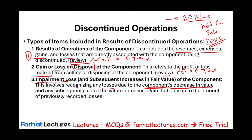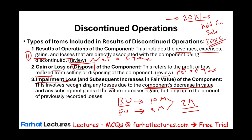So we put this discontinued operation for sale. The book value of the whole division is $10 million; the fair market value is $8 million. That means we have $2 million of losses — fair value minus cost to sell. Although we haven't sold the division, there are $2 million of losses because the fair value of that division went down. The division lost utility due to lack of demand or some other factor.